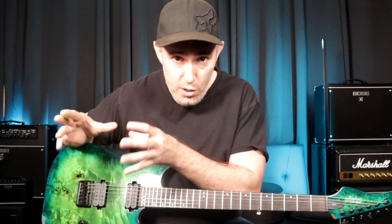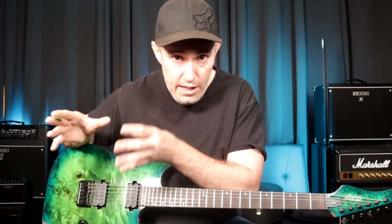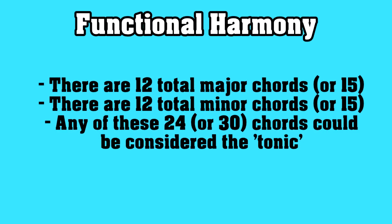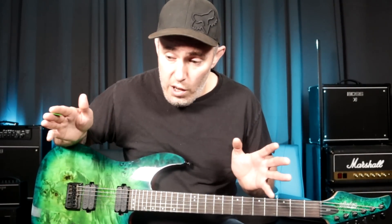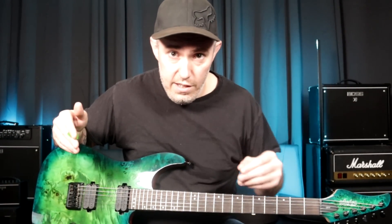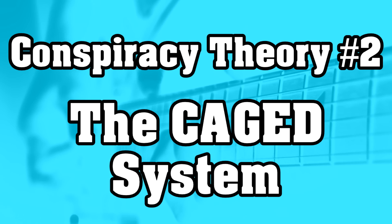In functional harmony, a tonic chord is considered the key. Since we have 12 major chords and 12 minor chords — or 15 each if you consider enharmonic equivalents — we have 24 to 30 individual chords, each of which could be labeled as the tonic. Under this rule set, since there are 24 to 30 possible chords each labeled as a tonic, there are 24 to 30 possible keys. But this only works if you understand that key does not equal key signature, and key instead equals a single chord.